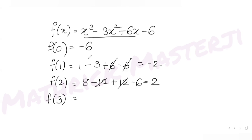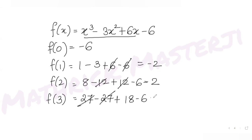For x = 3: 27 − 27 + 18 − 6 = 12. The 27s cancel, and 18 − 6 = 12, so f(3) = 12.